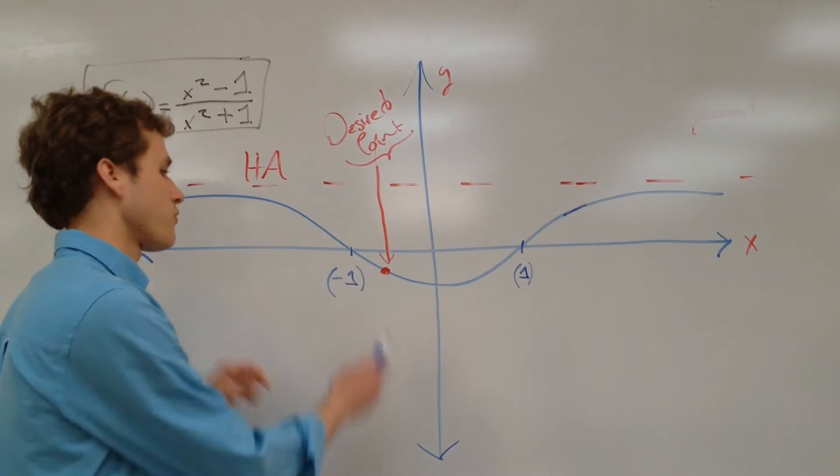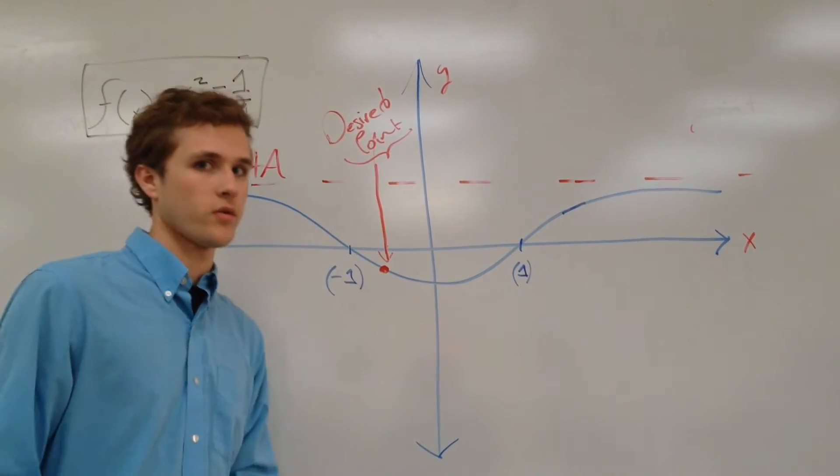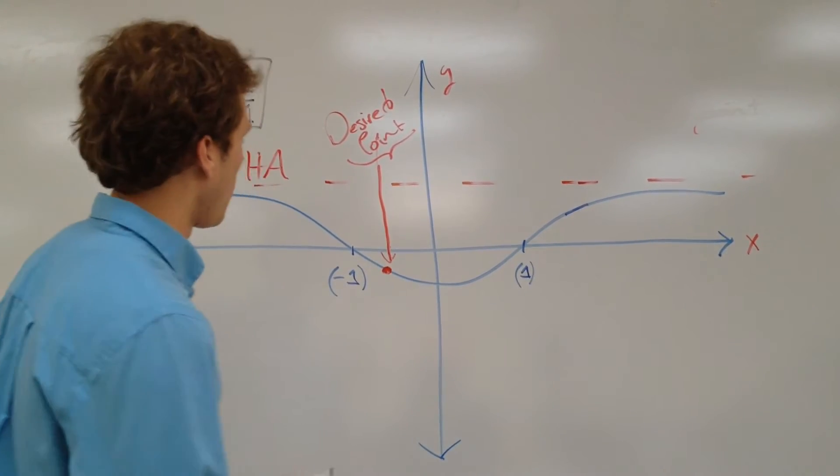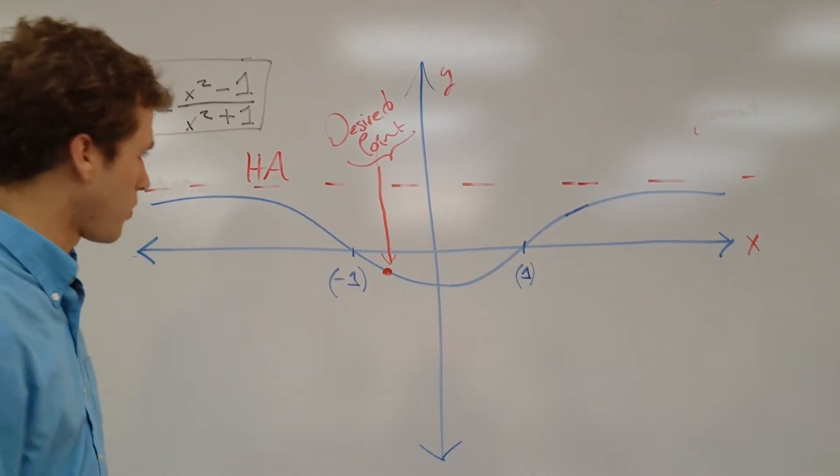What we're trying to do here is find this little point right here. Now, we have two points, negative 1 and positive 1, that are zeros, but that doesn't help us at all. We need to find this little point right here, what is the value of this point?